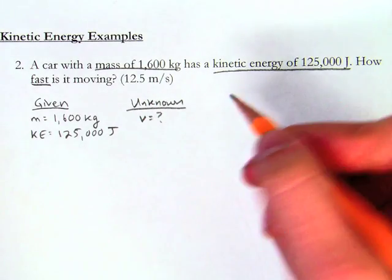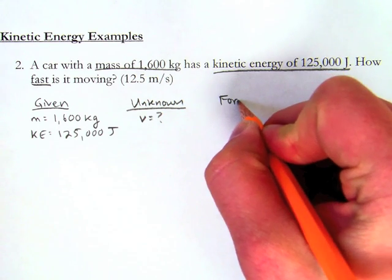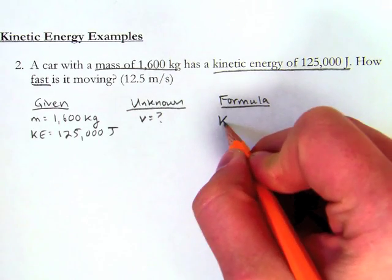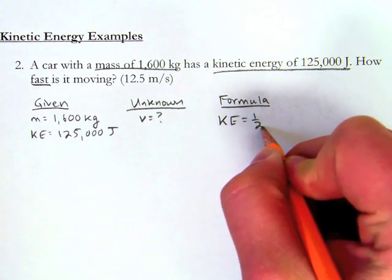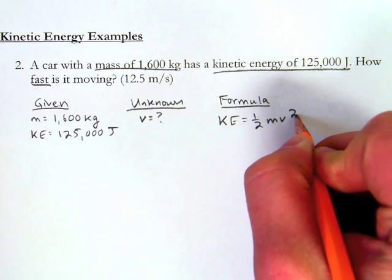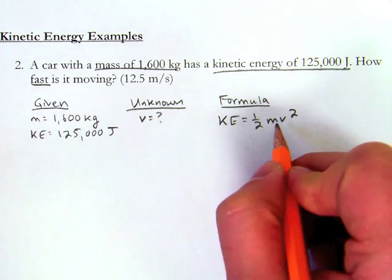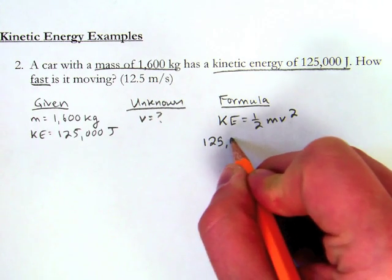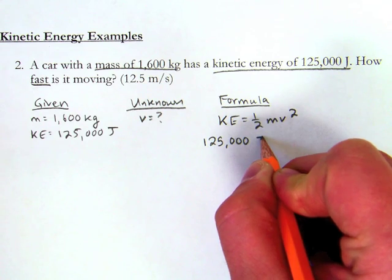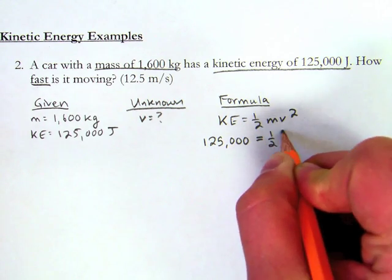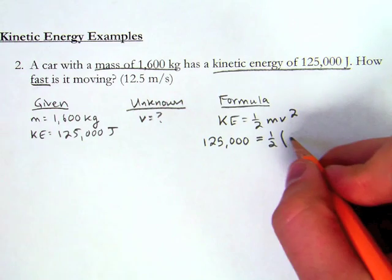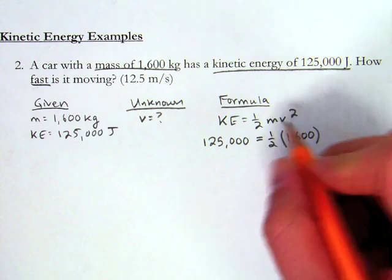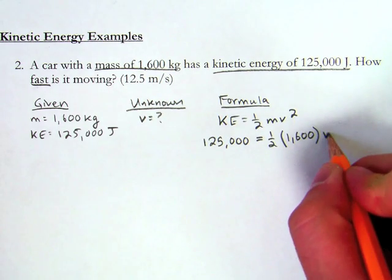I know that the formula that I use here is the same as before. My kinetic energy formula is 1/2 times the mass times the velocity squared. So when I make my substitution, the kinetic energy is 125,000 joules is equal to 1/2 the mass, which is 1,600, times, now I'm looking for the velocity, so I just leave my v squared where it is.